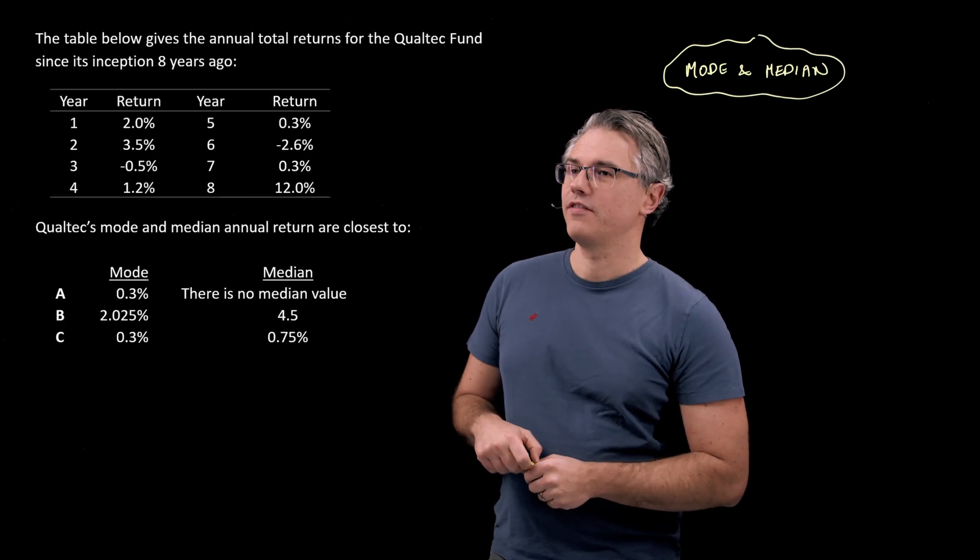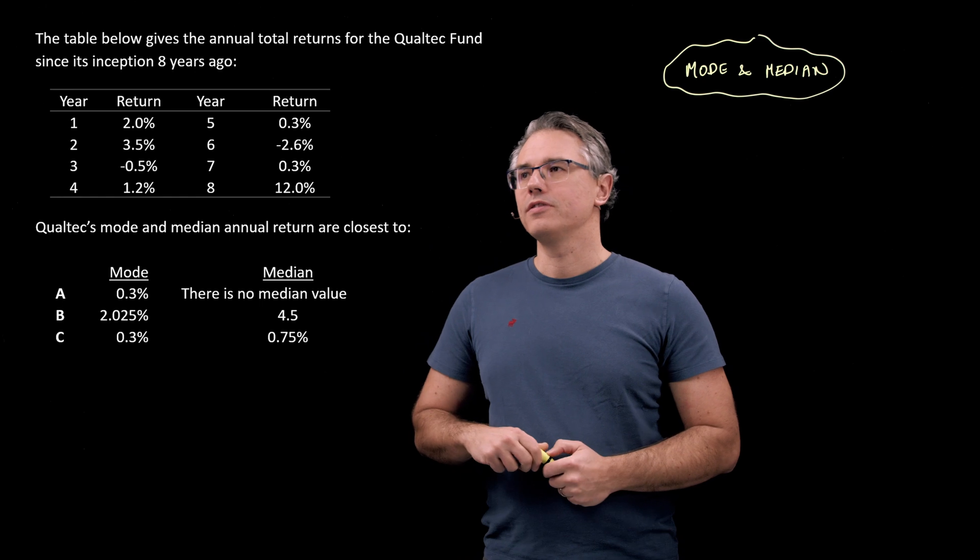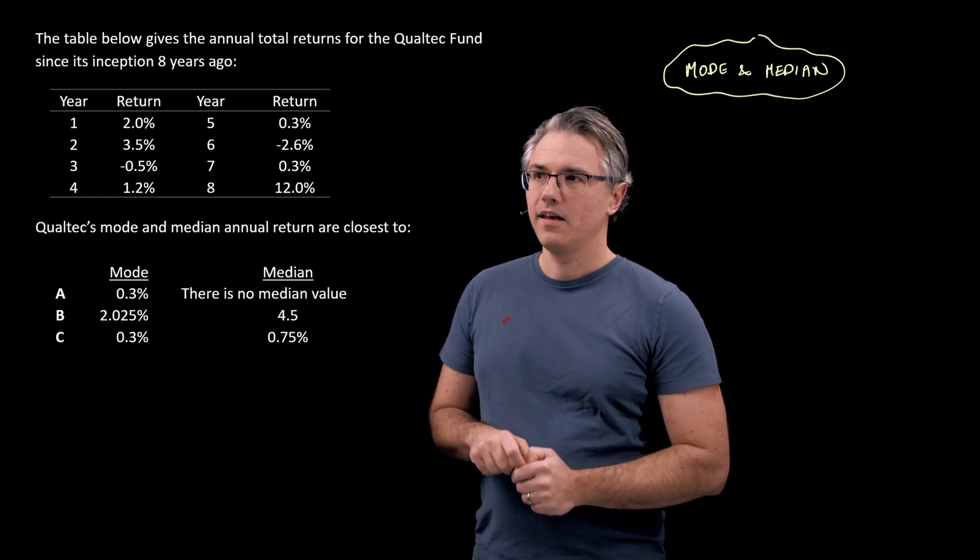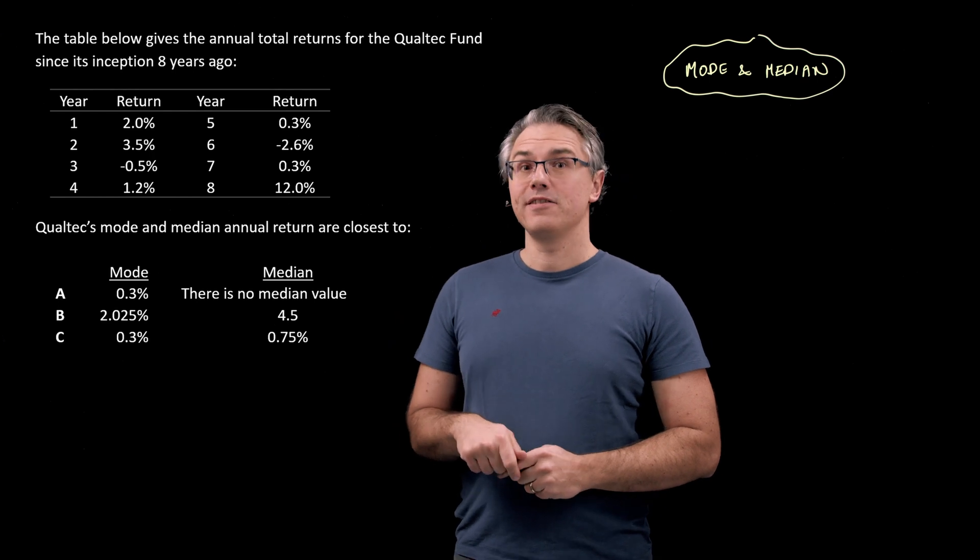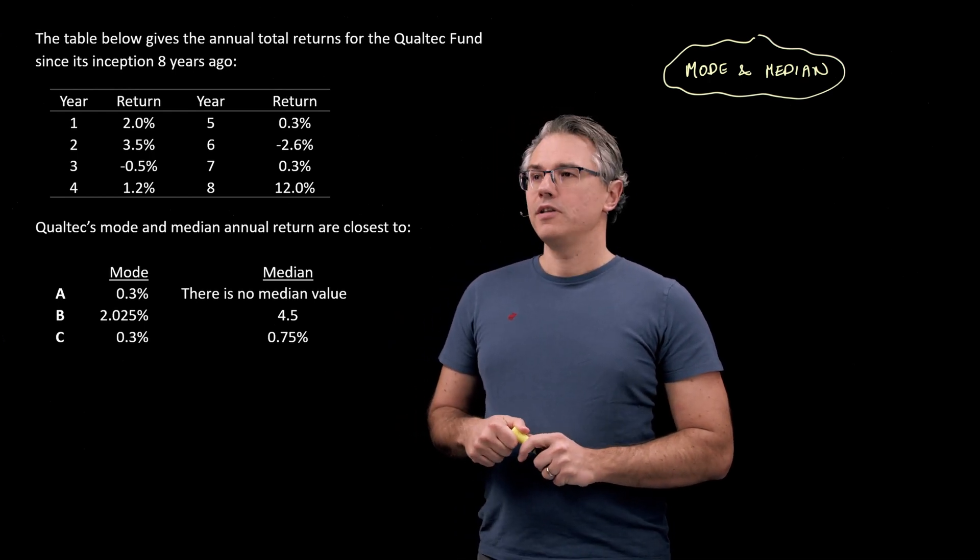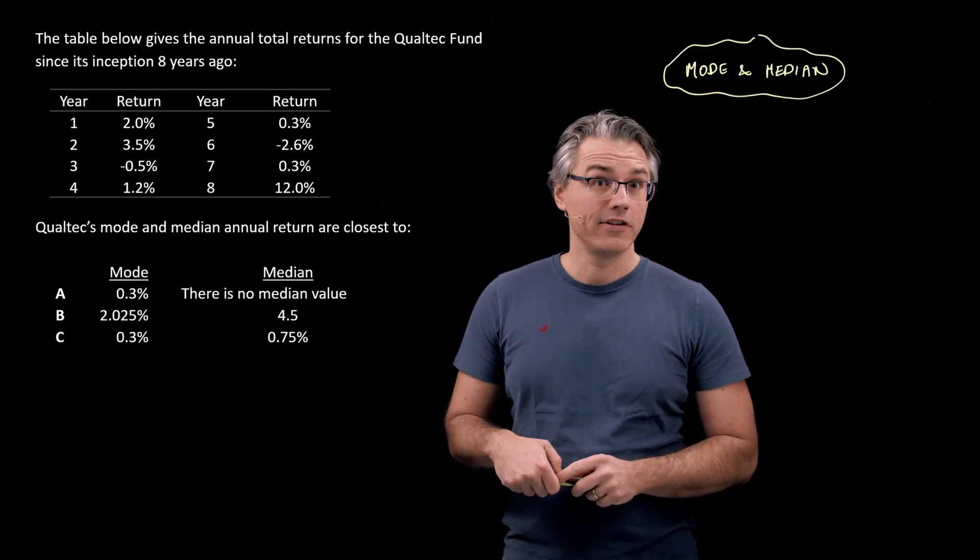So this is the question that I want us to have a go at. The table below gives the annual total returns for the Qualtech Fund since its inception eight years ago. And you've got eight years' worth of returns data. Now, Qualtech's mode and median annual return are closest to - three options follow.